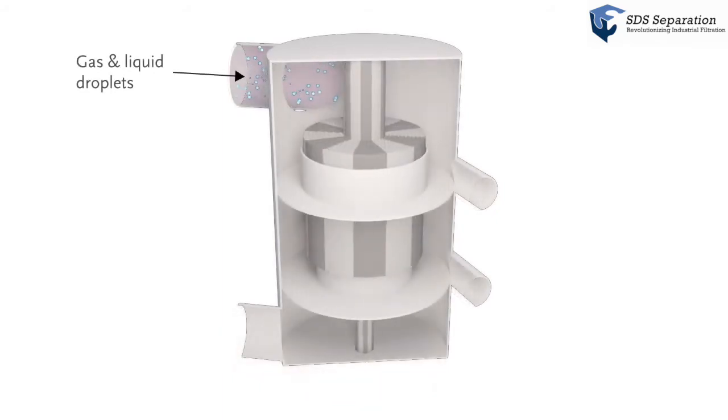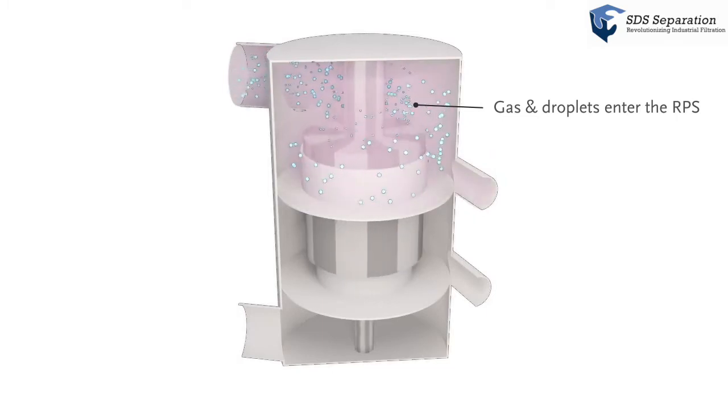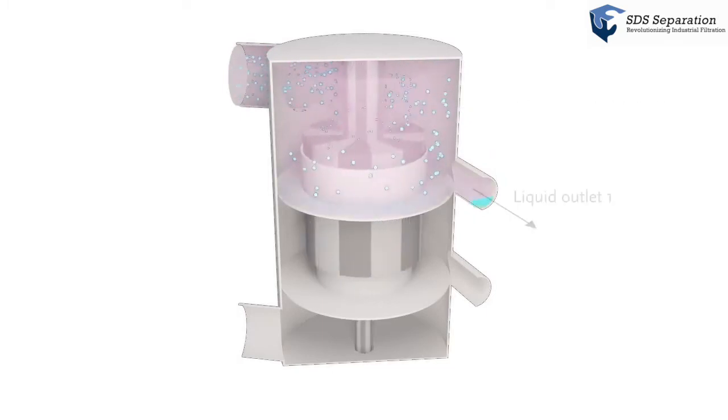Gas and droplets enter the rotational particle separator tangentially. They undergo a swirling motion. Large droplets are directly centrifugated to the wall of the cylindrical housing. They leave the separator via the first liquid outlet.